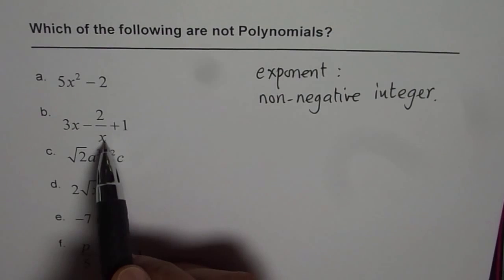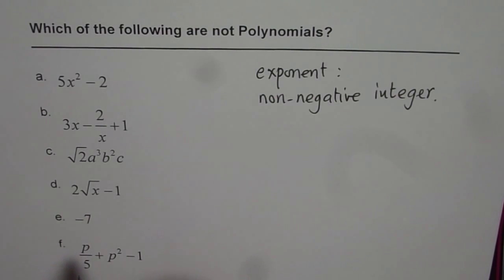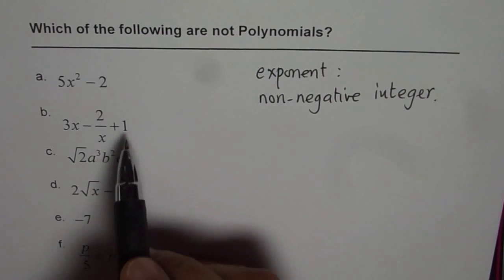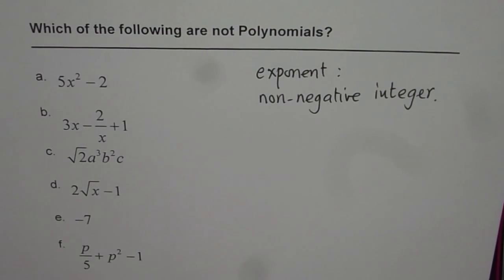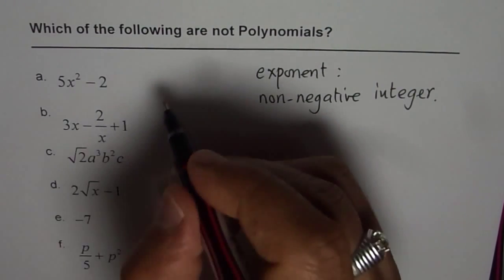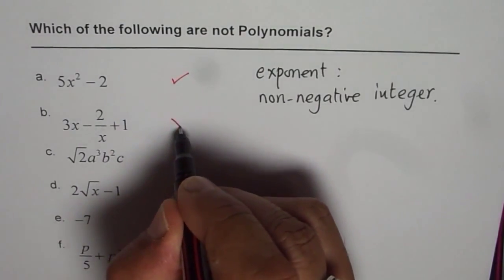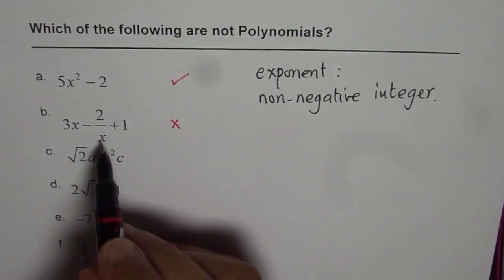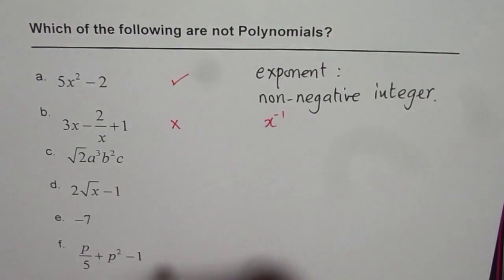Here, it is x to the power of minus 1 and therefore it is not a polynomial. So, this one is not a polynomial. Let me write down this one is a polynomial and this one is not a polynomial since here we have x to the power of minus 1.